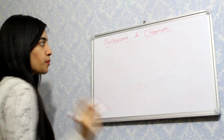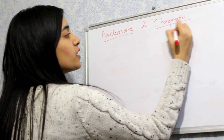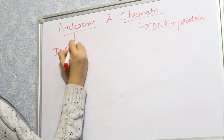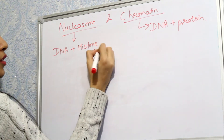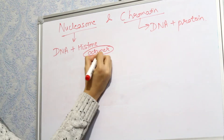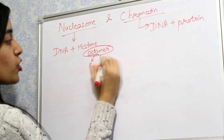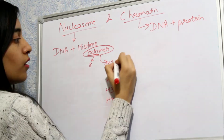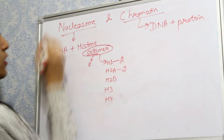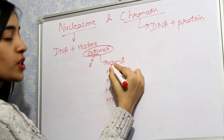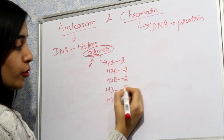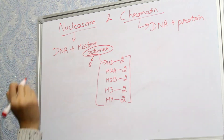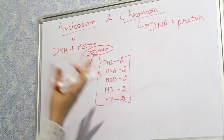Now let's discuss the difference between nucleosome and chromatin, which many students find confusing. Chromatin is simply DNA plus protein. A nucleosome is DNA plus a histone octamer — 'octamer' comes from 'octa' meaning eight, so it has eight histone proteins: H2A, H2B, H3, and H4, each present twice, giving eight proteins total that form the histone octamer.